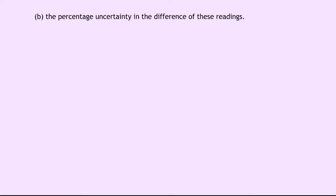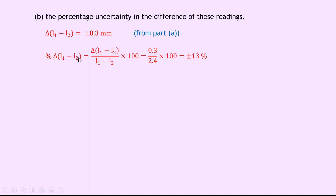Part B asks for the percentage uncertainty in the difference of these readings. We already established that the uncertainty in the difference is calculated the same way as for the sum, so the uncertainty in L1 minus L2 is plus or minus 0.3 millimetres. The percentage uncertainty in the difference is 0.3 divided by 2.4 — that's what we get when we subtract the two lengths — times 100, which gives us plus or minus 13%. That's a huge uncertainty compared to the uncertainty in the sum.